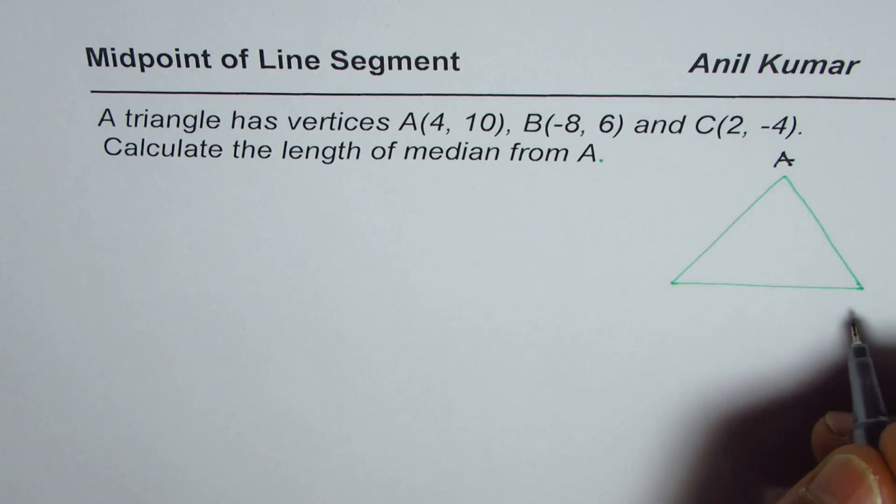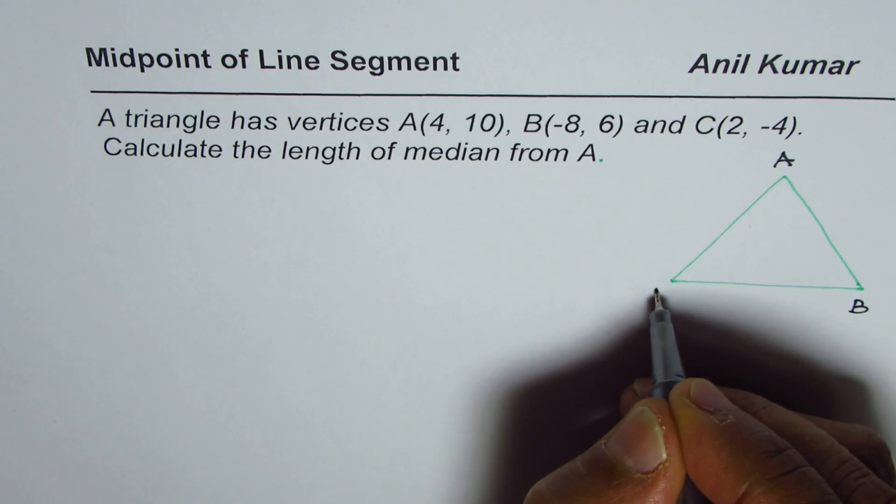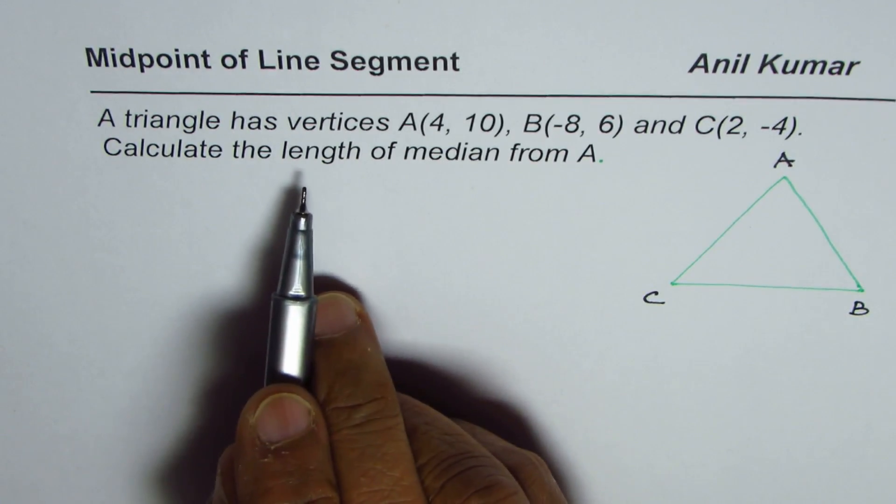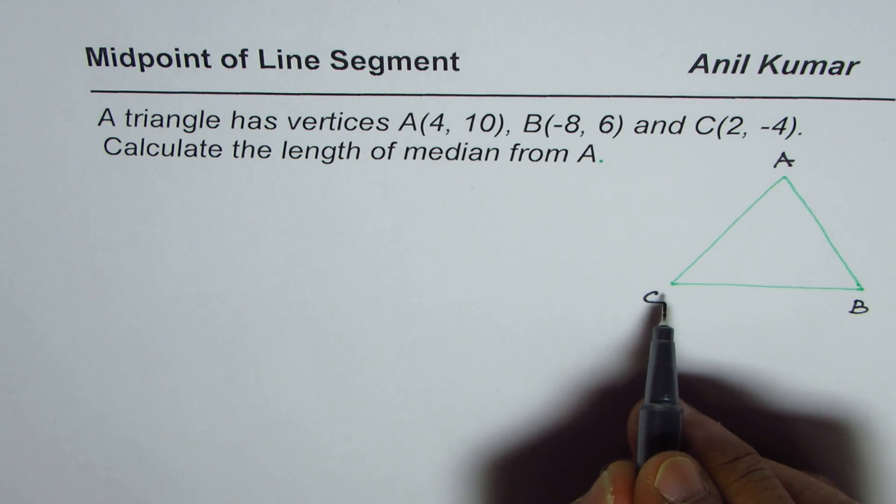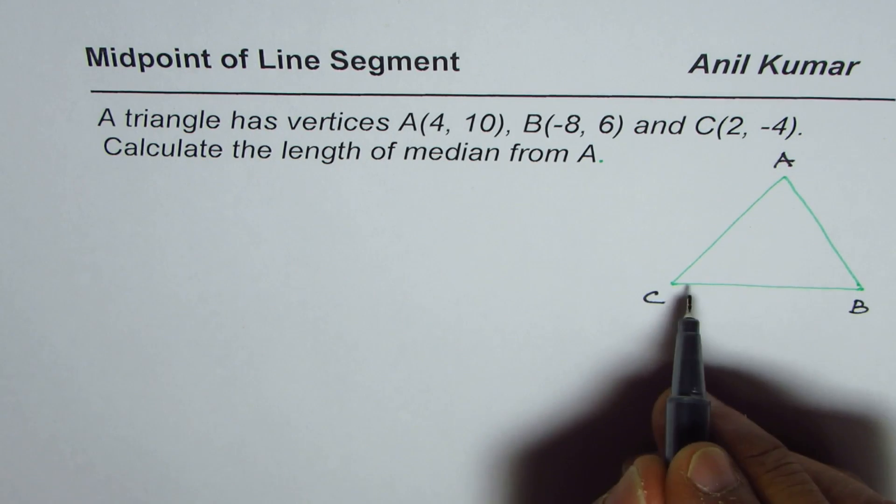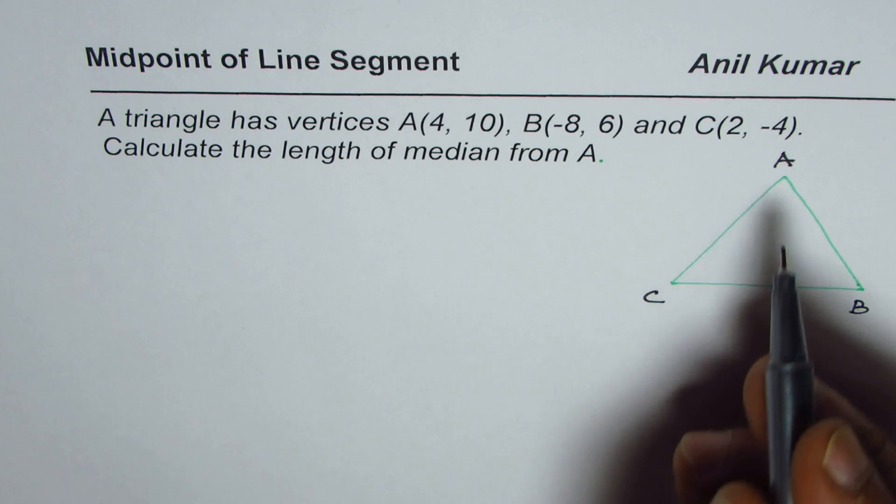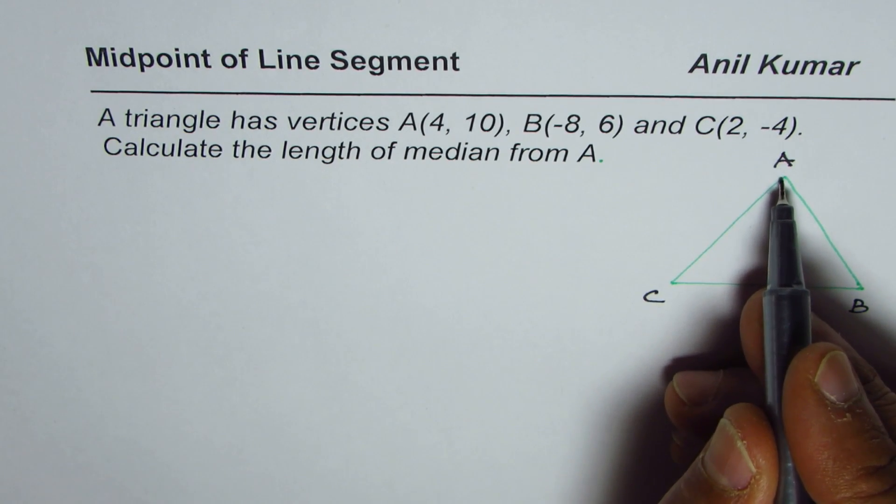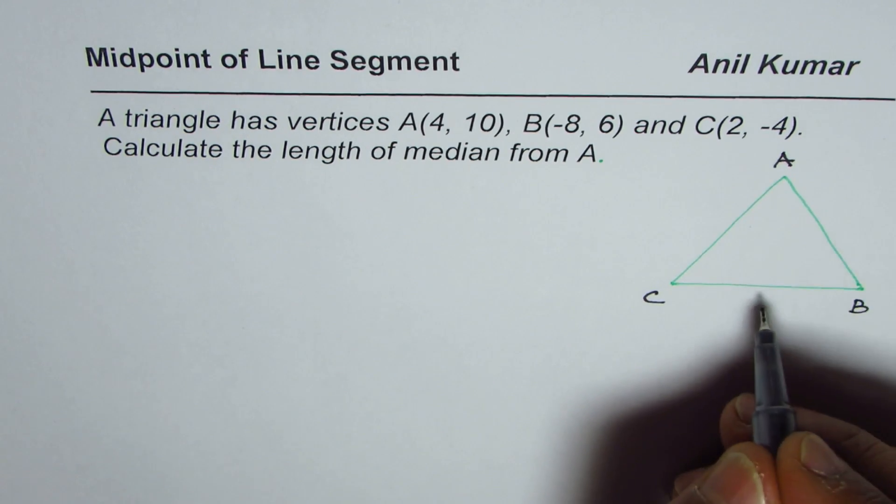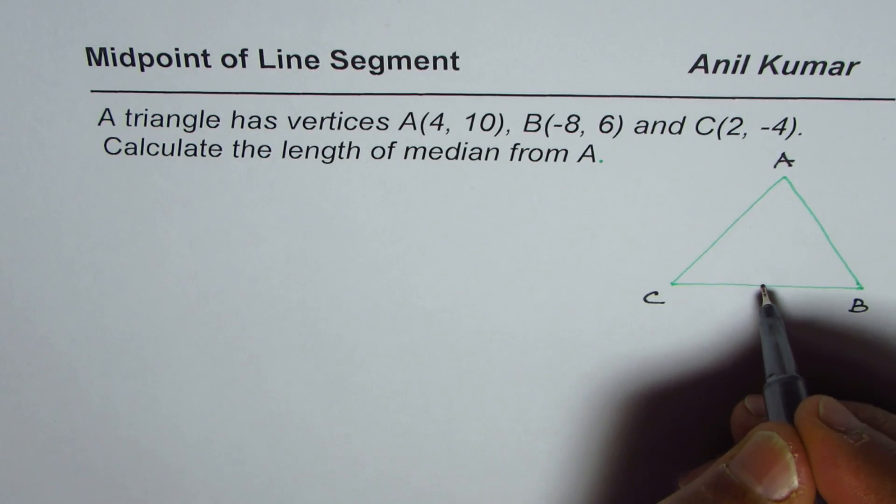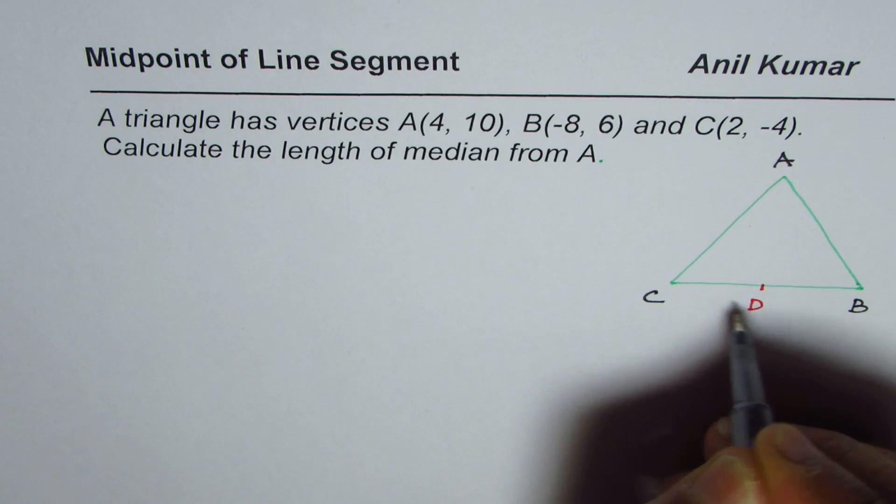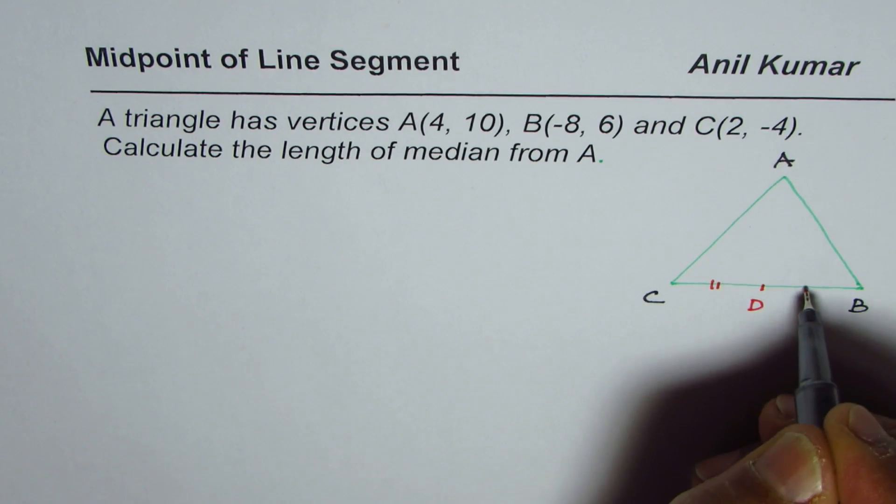Let A be this vertex, B and C. Median from A means we have to find the midpoint of the segment opposite to vertex A. Opposite to A is CB. Let's say the midpoint here is D. So D is the midpoint, meaning CD equals DB.